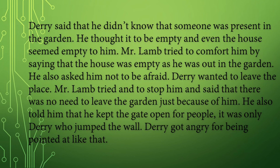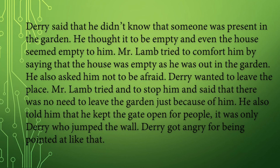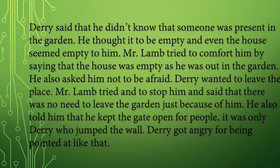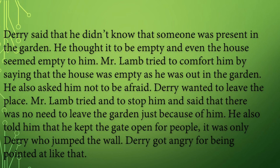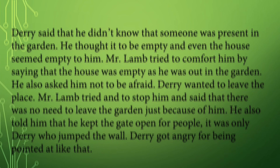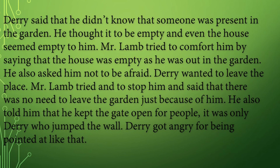Derry said that he did not know that someone was present in the garden. He thought it to be empty and even the house seemed empty to him. Mr. Lamb tried to comfort him by saying that the house was empty as he was out in the garden, and asked him not to be afraid. Derry wanted to leave the place, but Mr. Lamb tried to stop him, saying there was no need to leave just because of him. He also told him that he kept the gate open for people — it was only Derry who had climbed the wall.